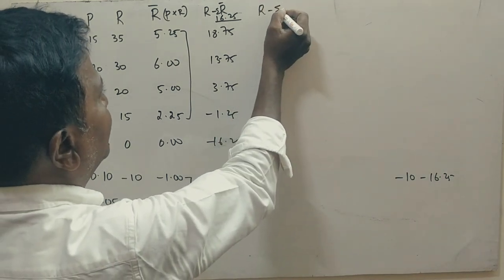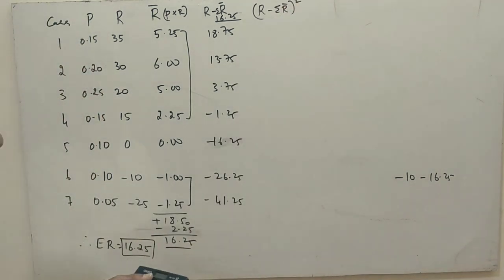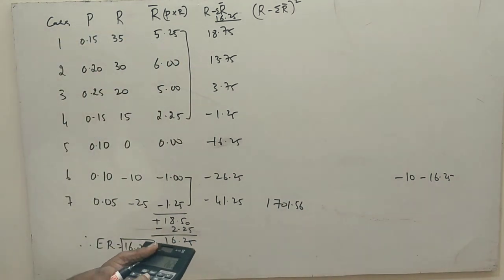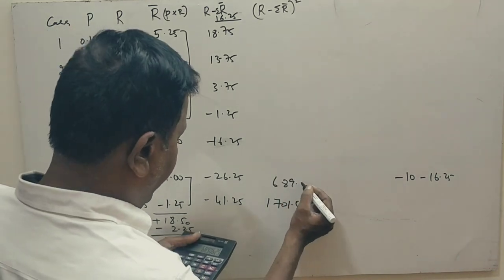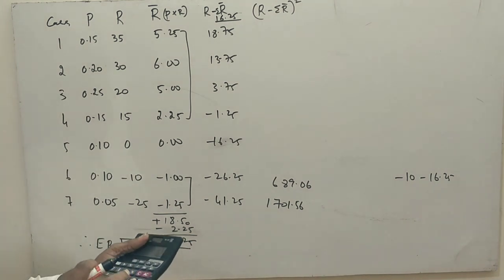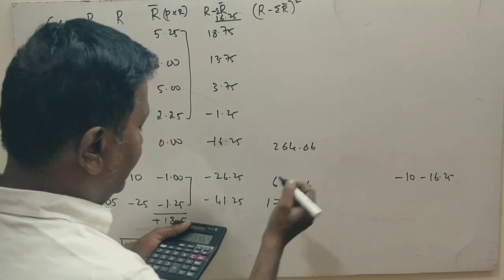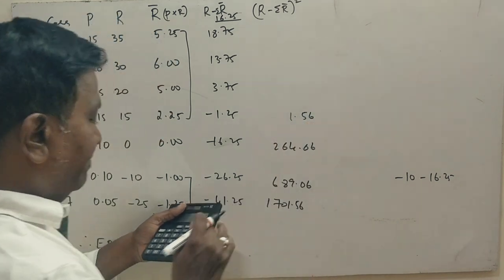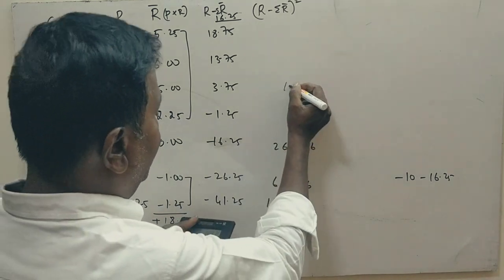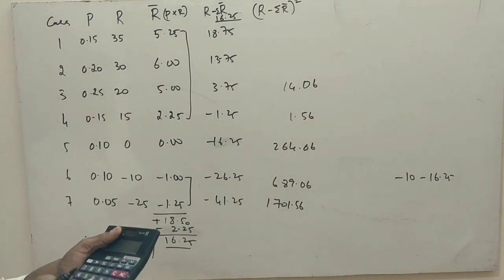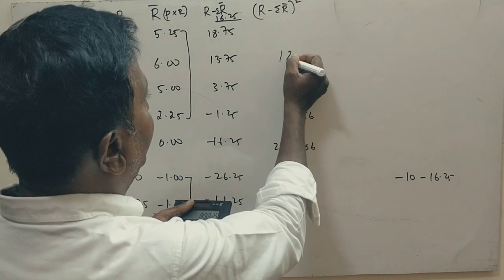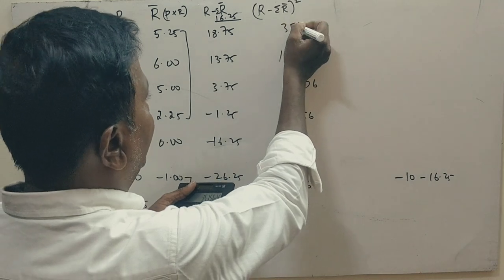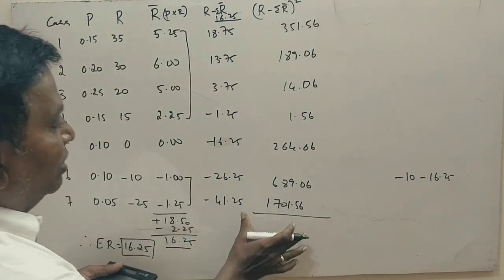Yes sir. R minus summation R dash whole square. Now this is 1701.56, 26.25 squared is 689.06, 16.25 squared is 264.06, 1.25 squared is 1.56, 3.75 squared is 14.06, 13.75 squared, 18.75 squared is 351.56. Check this, no need of checking this total.